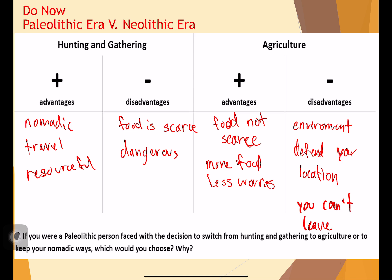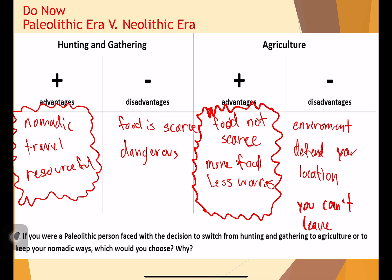So if you were a Paleolithic person and had to switch from being a hunter-gatherer to agriculture, would you do it? The arguments for staying a hunter-gatherer are that you're nomadic, you travel on your own, you can travel the world, and you're very resourceful — nothing is holding you back. If you choose to be a farmer, the advantages are simple: you have a constant food source. When you get hungry, you can eat anytime. More food in your possession means less worry, and you can do whatever you want without finding a meal every night.